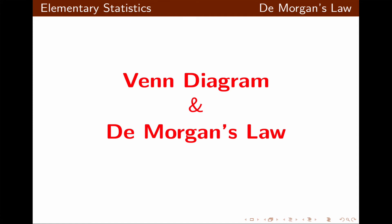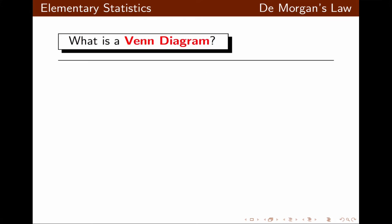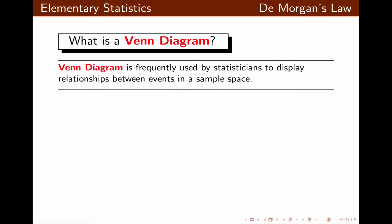In this presentation, we're going to visit Venn Diagrams and DeMorgan's Law. A Venn Diagram is frequently used in statistics to display relationships between events in a sample space. Sample space is the entire collection of all outcomes.